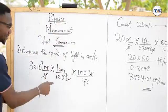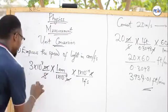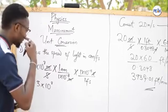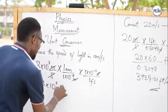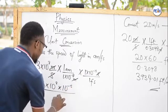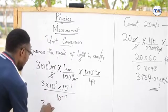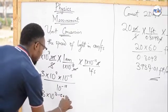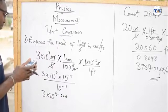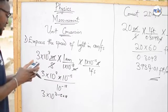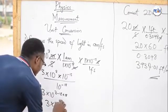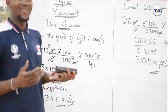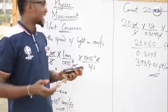We can now solve for the answer. We have 3 × 10⁸ at the top, times 10⁻¹⁵ (from the femtosecond chain), divided by 10⁻¹⁸ (from the attometer chain). Using the laws of indices: 8 + (−15) + 18 = 11. Therefore the answer is 3 × 10¹¹ attometers per femtosecond. Very easy.